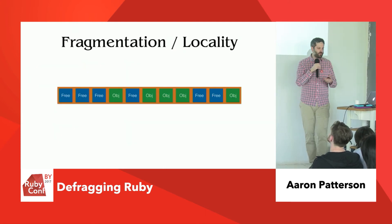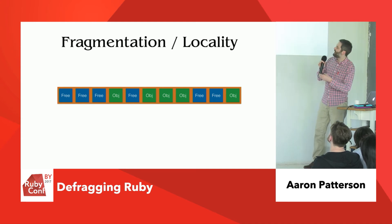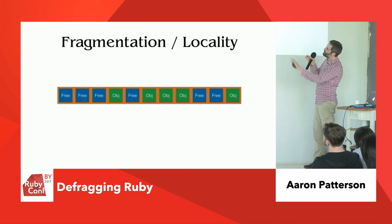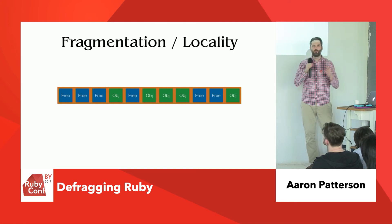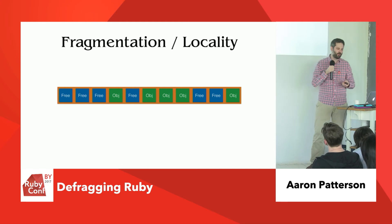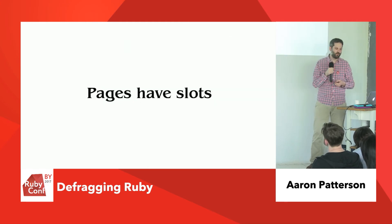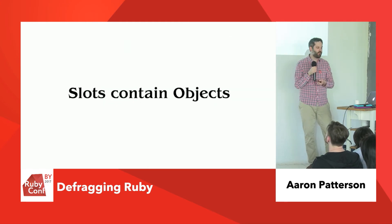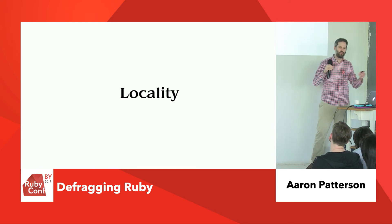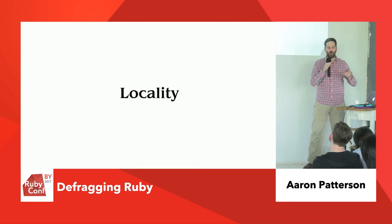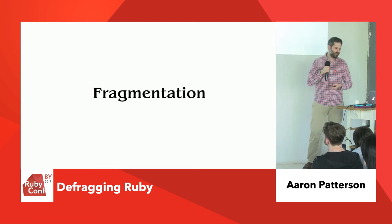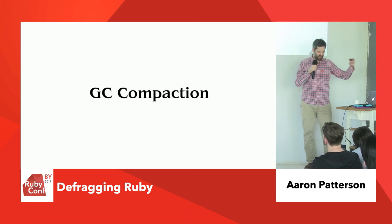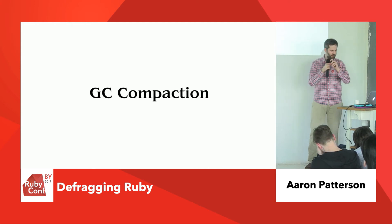Let's talk about fragmentation and locality. Fragmentation is how spread out the objects are — do we have spaces between them, free slots? If we can move those objects together, we can improve the locality and decrease the fragmentation. Our slots contain objects; locality is how close together the objects are, fragmentation is how much space is between those objects. So let's talk about GC compaction — 70 slides in five minutes, let's do this.